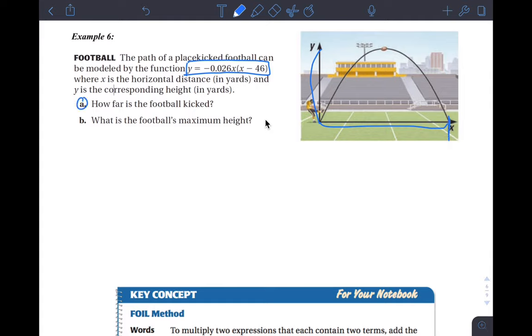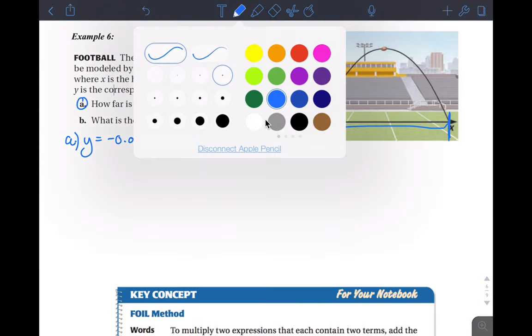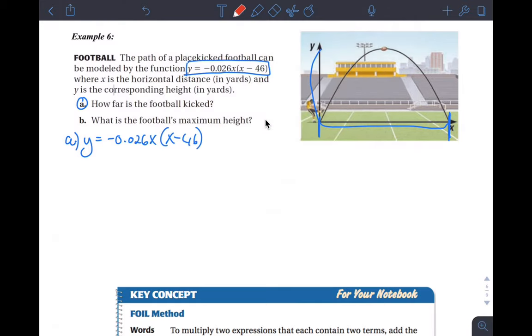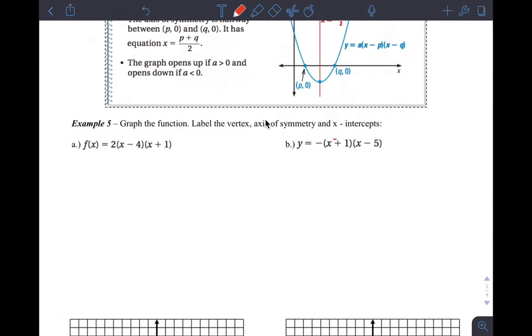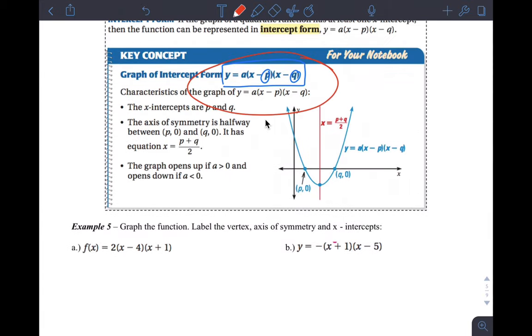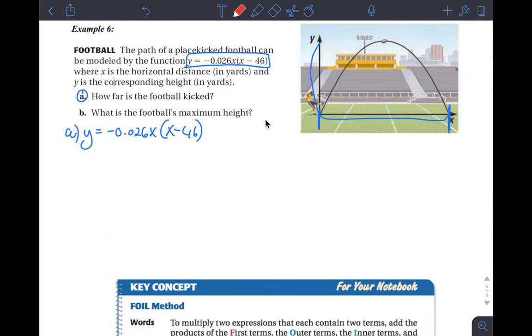Question a is: how far is the football kicked? So in other words, what's this distance from here to here? If you just look at the function that's given, I'm just going to write it down again. It's not that apparent what form this function is in, but the hint I gave you earlier is that it's in this form, and I'll show you why.